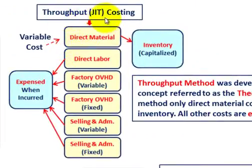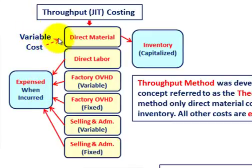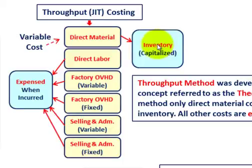Let's look at throughput costing in terms of the inventory — what gets capitalized in inventory versus what gets expensed when it's incurred. With throughput costing, the only cost considered variable is the direct material, and that is what goes into the inventory.